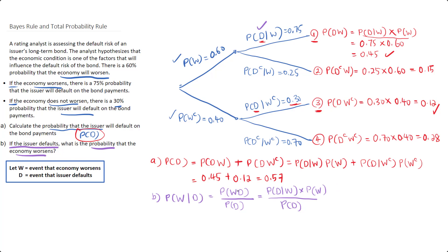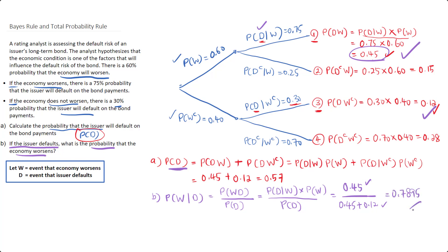The probability that the economy worsens and the issuer defaults is 0.45 (path 1). The denominator is the probability that the issuer defaults, calculated in Part A using the total probability rule — the sum of path 1 and path 3. So the answer is 0.45 divided by (0.45 plus 0.12), which is 0.45 divided by 0.57. We are calculating the ratio of default-with-worsening to total default probability. That gives us 0.7895, or approximately 78.95% — the probability that the economy will worsen if the issuer defaults.